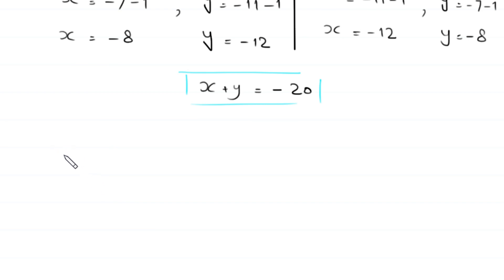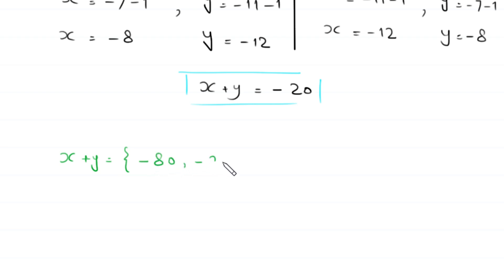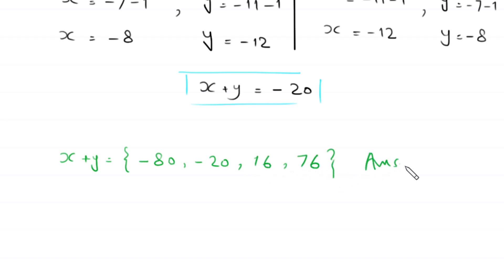So the final set of solutions for x plus y is: negative 80, negative 20, 16, and 76. This is the final answer of this equation.